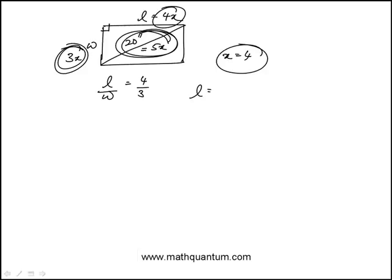So we know that length is 16, width is 12. They're asking for the perimeter, which is 2 times L plus W. 2 times 16 plus 12, that's 28 times 2 is 56, answer B.